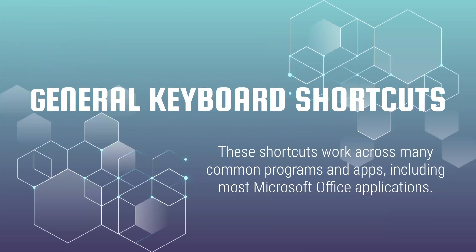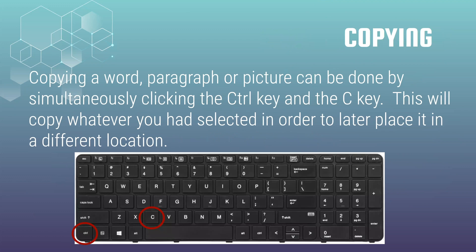General keyboard shortcuts. These work across most applications such as Microsoft Office and Windows. Copying a word, paragraph, or picture can be done by simultaneously clicking the control key and C. This will copy whatever you had selected so you can put it into a different spot. For example, if you're copying a file, you can paste it in another folder.